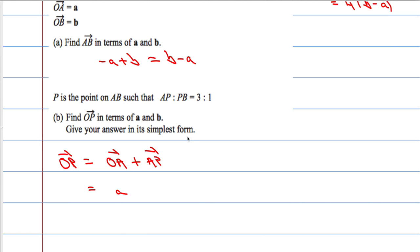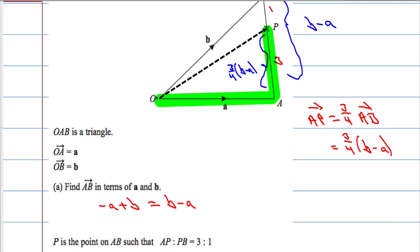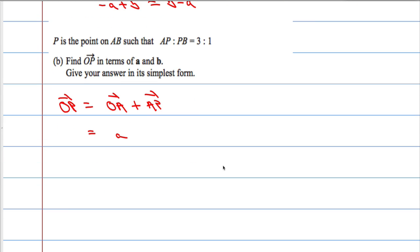OA is A. From O to A is A. To go along here, that's A. And to go from A to P, well, that's the same as 3 quarters of B minus A. B minus A. So that's equal to A plus 3 quarters B minus 3 quarters A. And A, take away 3 quarters of A, is 1 quarter A. And I need to add on that 3 quarters of B.